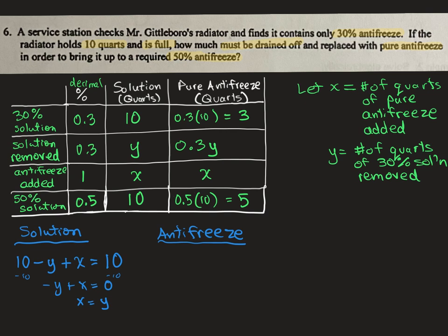So that's one equation, y is equal to x, or x equals y. Now the next equation is going to represent the antifreeze. So we started with three quarts of pure antifreeze. We removed a certain amount of antifreeze, and it was like 30% of what we removed, so minus 0.3y. We're kind of using this column, this last column for this last equation. First equation, we used this column.